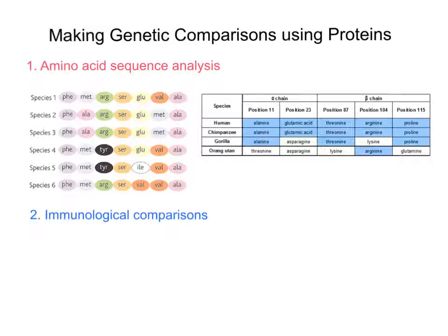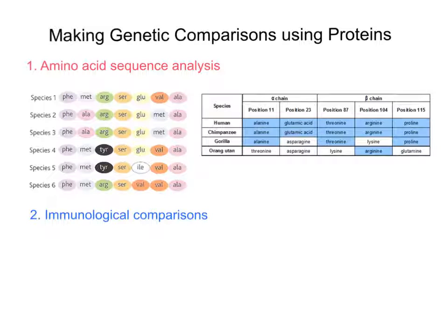There's one key thing that really underpins this, and it's that similar organisms essentially have similar protein structures. We can compare this in two ways. One is via analysis of the amino acid sequence — amino acids being the monomers that make up proteins — so we can look at the amino acid sequence and see if there are any similarities or differences. The second is by what we call immunological comparison, looking at things through the immune system, which we'll come on to a bit later.